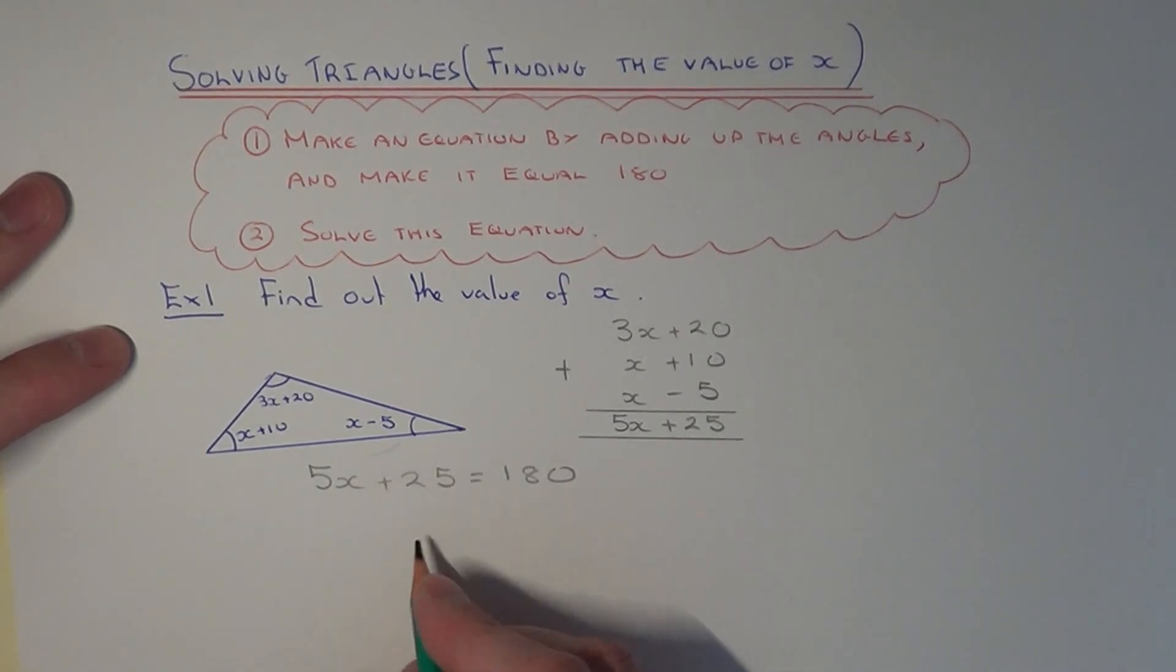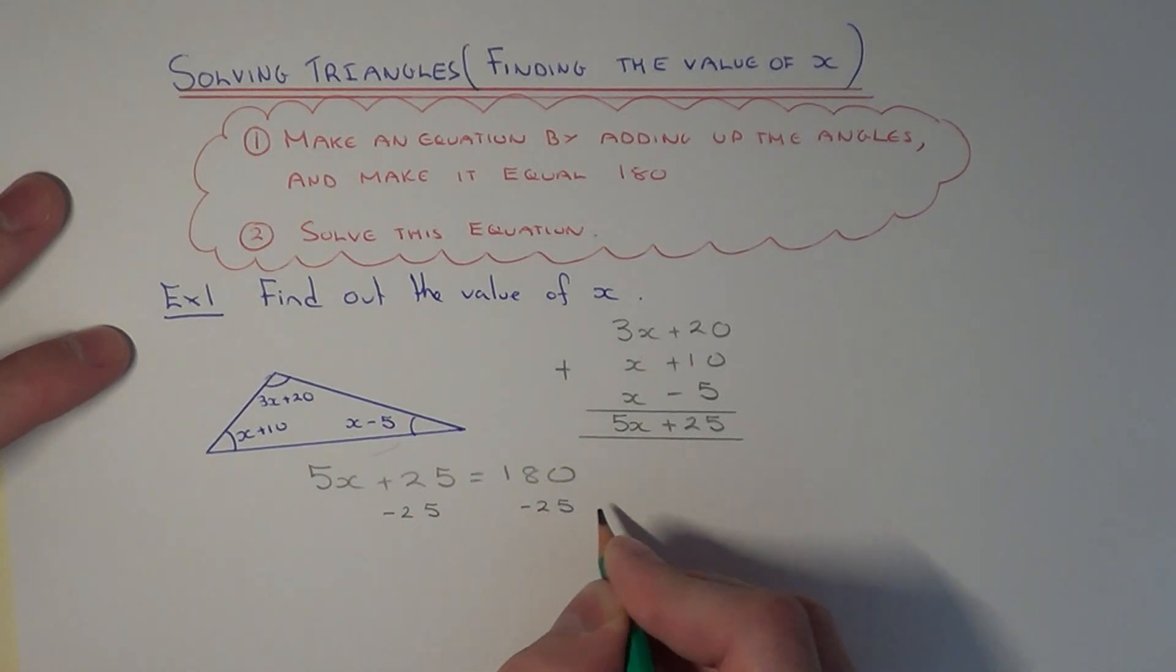To solve the equation, get rid of the plus 25 by subtracting 25 off both sides. This will give 5x equals 155.